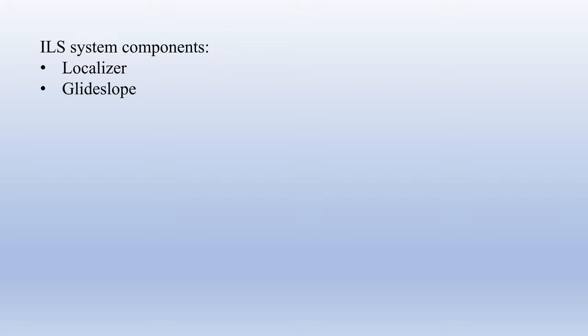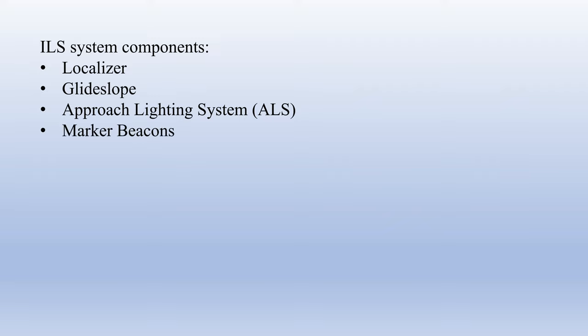The ground-based components of an ILS include a localizer, a glide slope, and an approach lighting system or ALS. Some systems still have marker beacons and some will have compass locators. Let's take a look at these components in depth.